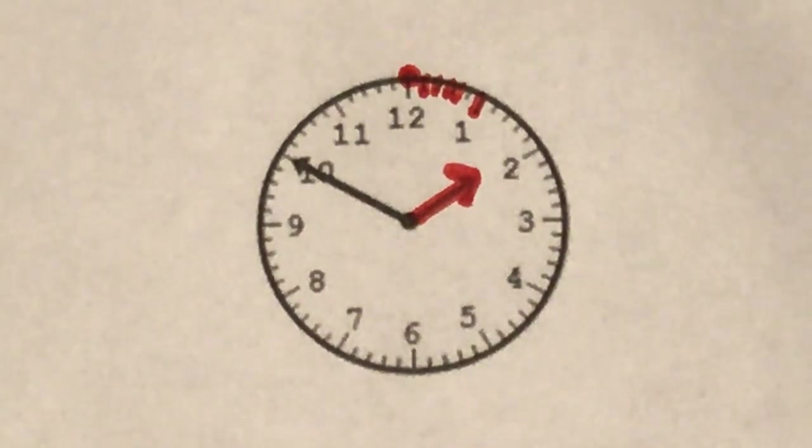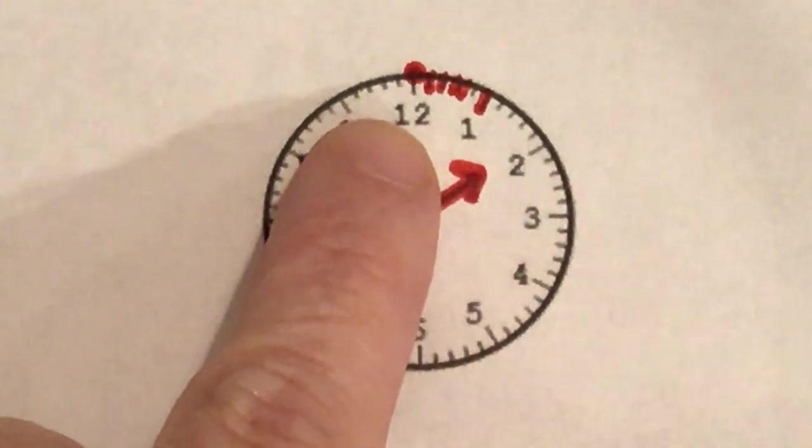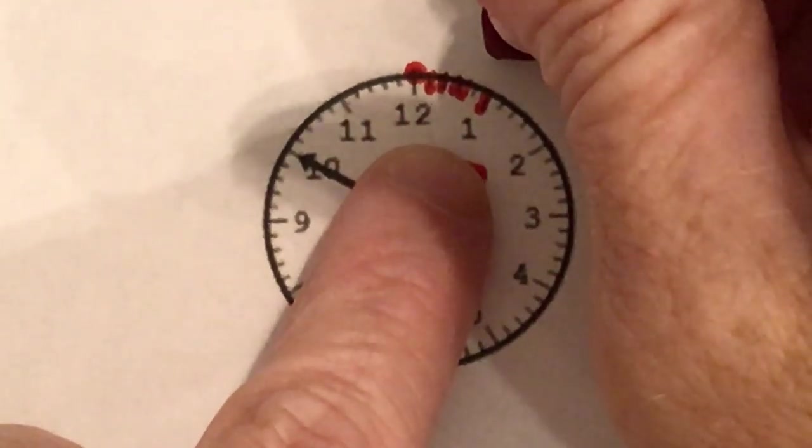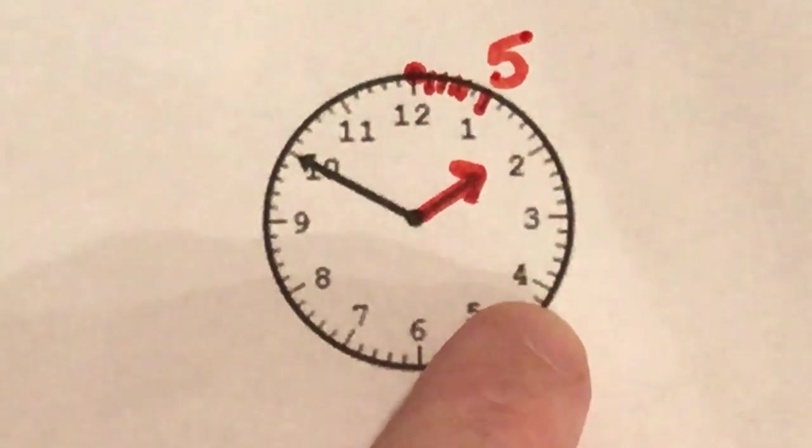I could count all of them around. That would work but it might take me a long time. So what I noticed when I got to the one is there were five. So I can put a five by the one.